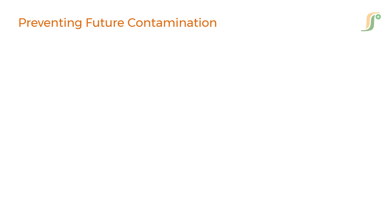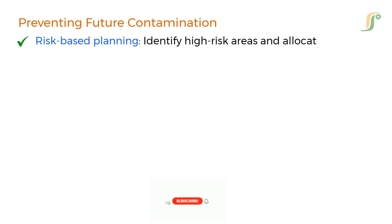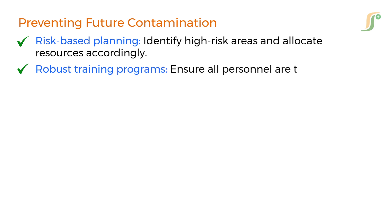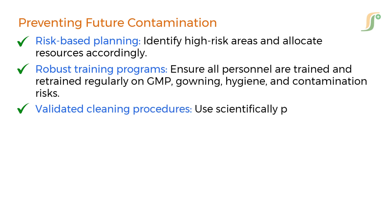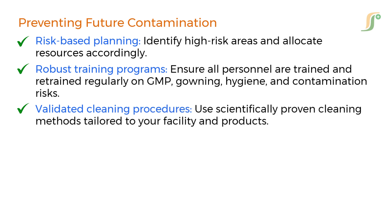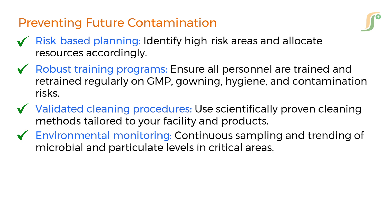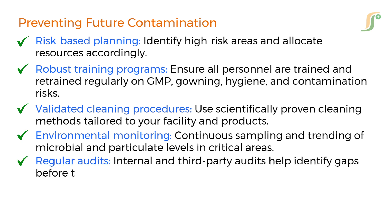The best way to deal with contamination is to prevent it in the first place. Preventive strategies include risk-based planning to identify high-risk areas and allocate resources accordingly. Robust training programs ensure all personnel are trained and retrained regularly on GMP, gowning, hygiene, and contamination risks. Validated cleaning procedures use scientifically proven methods tailored to the facility. Environmental monitoring involves continuous sampling and trending of microbial and particulate levels in critical areas. Regular internal and third-party audits help identify gaps before they become major issues.